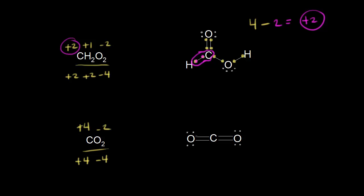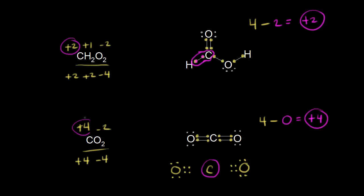Looking at the dot structure for CO₂, we put in our bonding electrons. Oxygen is more electronegative than carbon, so each oxygen steals all the electrons in its double bond. The four electrons in the left double bond go entirely to the left oxygen, and the right oxygen takes all the electrons in its double bond too — leaving carbon with zero electrons around it. So four minus zero gives an oxidation state of plus four, just as predicted.